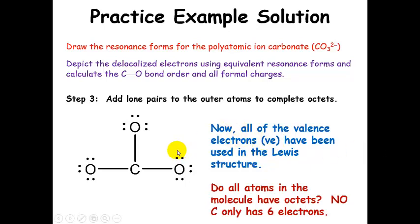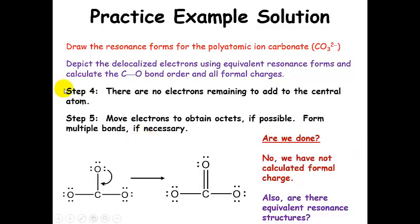Now we check each atom to see if they all have octets. We notice that carbon does not have an octet. Since carbon does not have an octet and we have no more electrons to add to the central atom, we go to step four: we don't have remaining electrons, so we move electrons and form multiple bonds to obtain octets. I'm going to take this electron pair and make a double bond right there. Now checking each atom: two, four, six, eight — that one has an octet, this one has an octet, this one has an octet, and carbon has an octet. We've obeyed the octet rule.